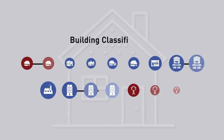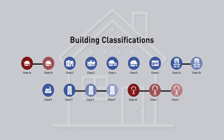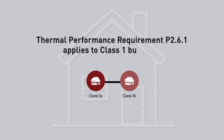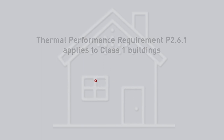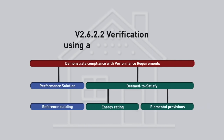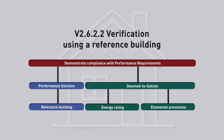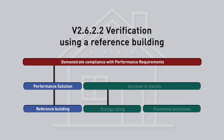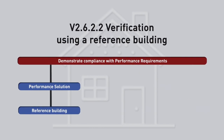The NCC is a performance-based code. It requires all houses to make efficient use of energy, particularly the energy required for cooling and or heating. One way to verify that the relevant performance requirement is met is to compare the design with a reference building based on the elemental deemed to satisfy provisions.